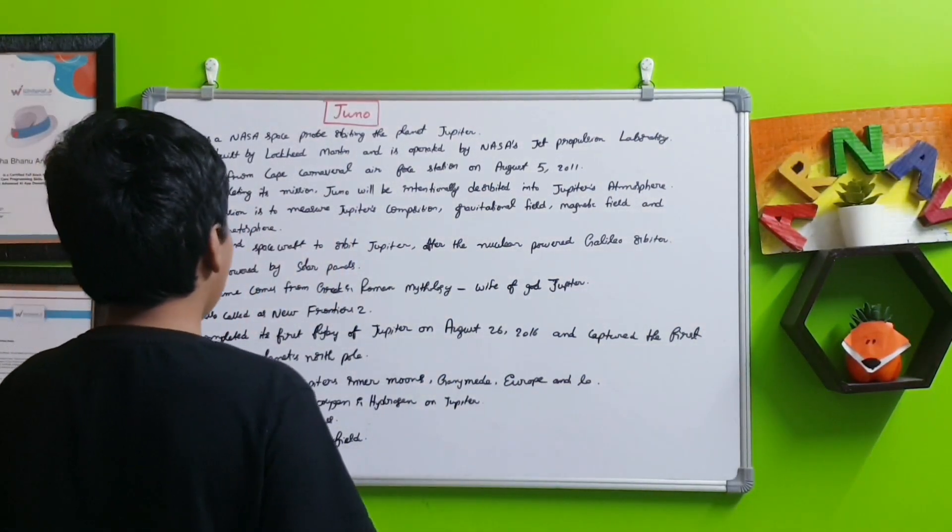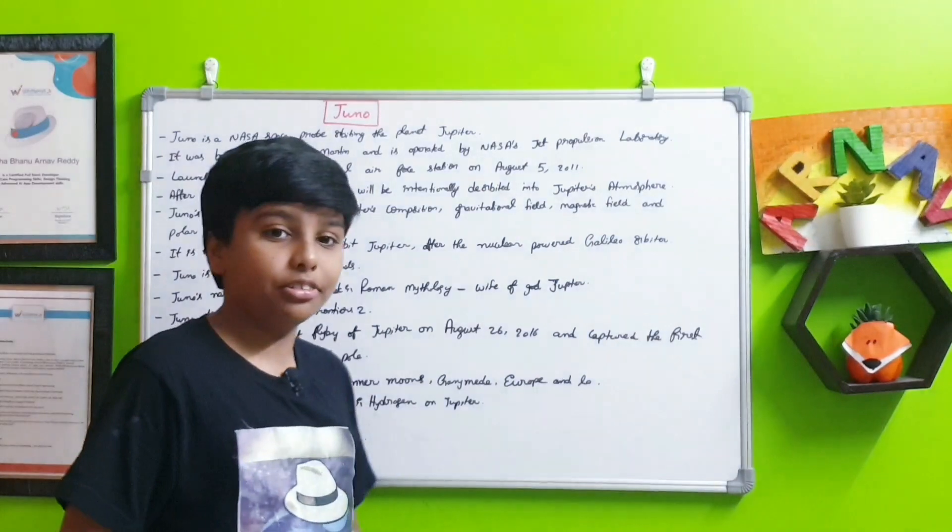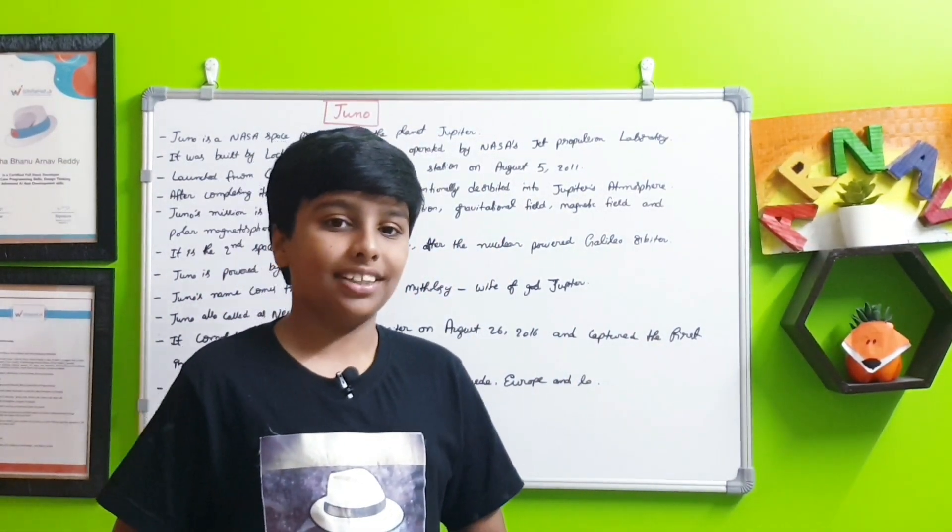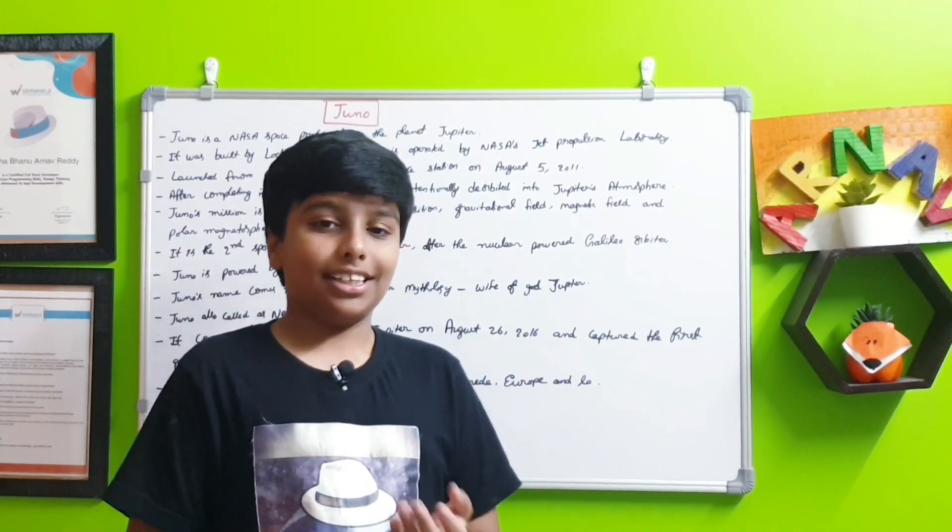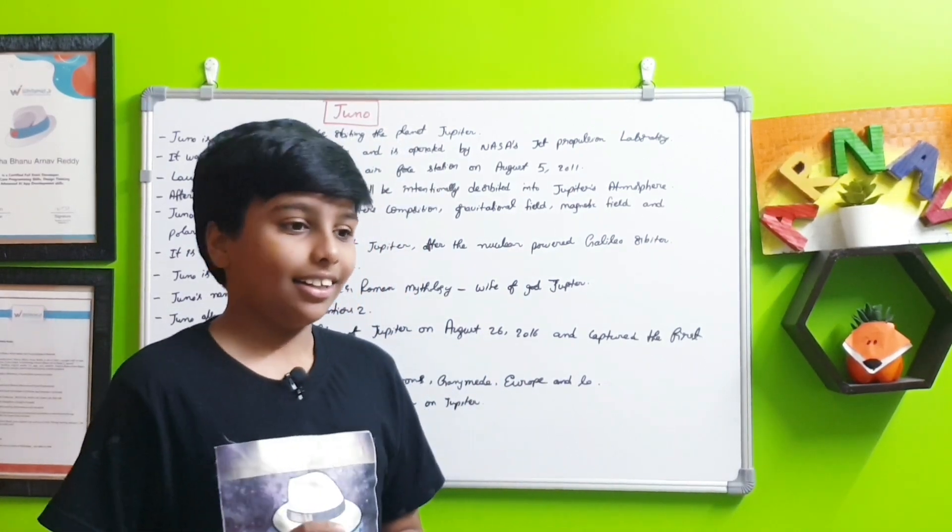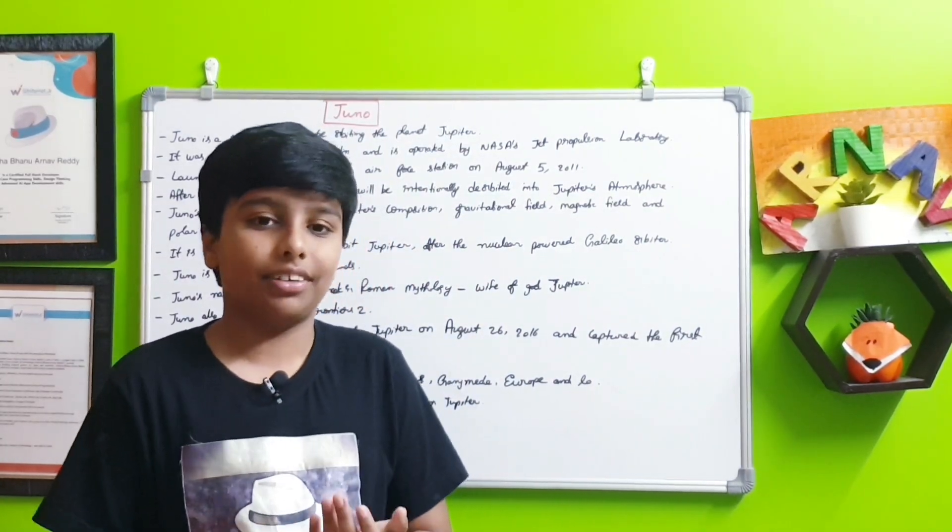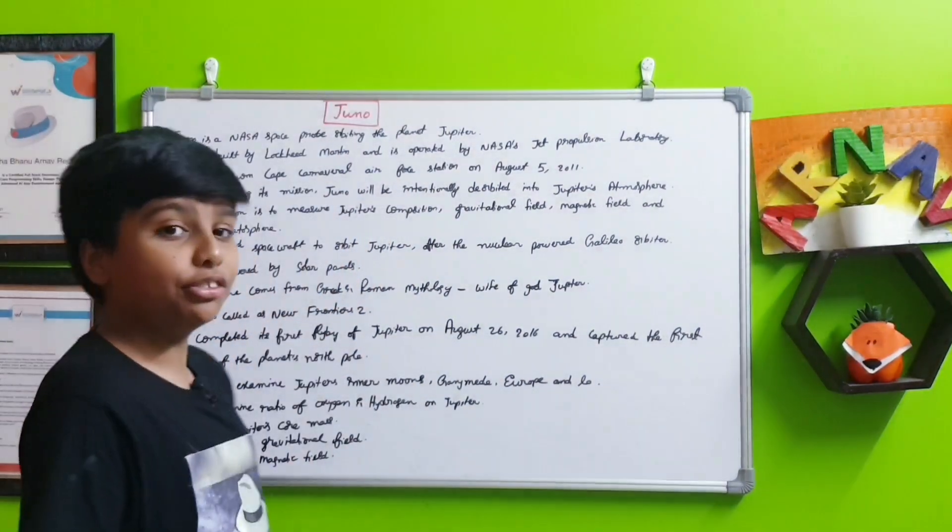Juno is also called New Frontiers 2. New Frontiers is just a series of many spacecrafts, examples being the Osiris Rex and the New Horizons. New Horizons was the first one, the second one is Juno.